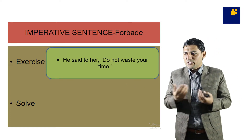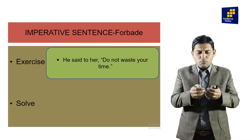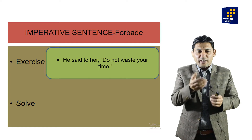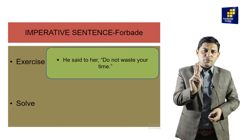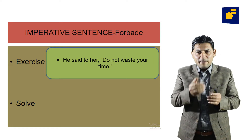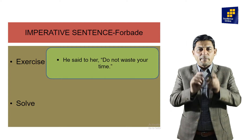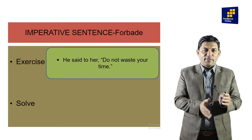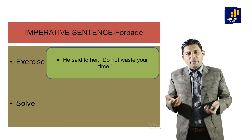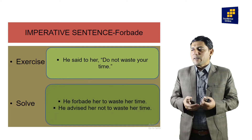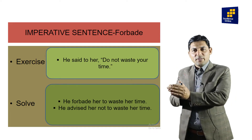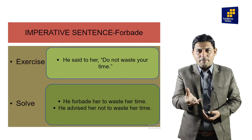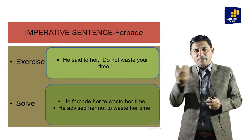Number four mood is forbid. Example: 'He said to her, don't waste your time.' When we have 'do not' or 'never,' the structure is negative. We have two approaches. First: use the verb 'forbid' — 'He forbade her to waste her time.' 'Forbid' already carries the negative meaning, so we do not add 'not.' Second approach: use 'advised' with 'not.'